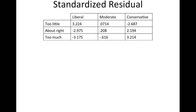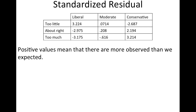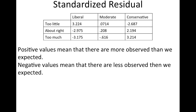Here are what your standardized residuals should be for this problem. We have some positives and some negatives, and they do tell us something. Positive values mean there are more observed than we expected — so the 3.224 and 3.214 mean we had more people fall into that category than expected. Negative values mean there are fewer observed — so the negative 3.175 means we had a lot fewer liberals who thought spending was too much than we expected to happen.